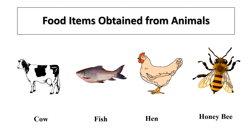Now let's understand food items obtained from animals. Milk, eggs, meat, honey, and fish are some food items we get from animals.